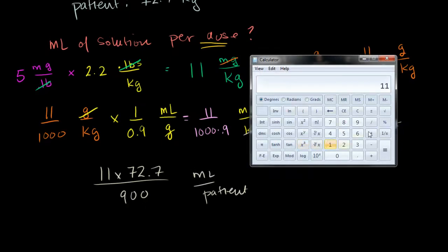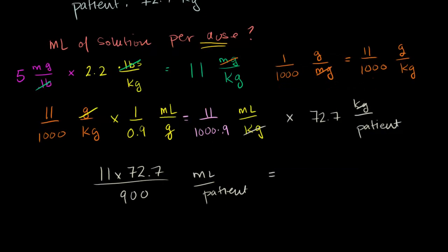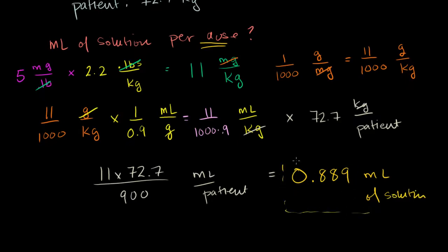So we have 11 times 72.7 equals 799, divided by 900, equals 0.889 milliliters of solution per dose. This is what we give every 12 hours. If they asked how many total milliliters over two days, we'd have 48 hours and multiply by 4, but that 12 hours was extra information for this problem. Hopefully this is useful and will ensure that any nurses serving me in the future give me my proper dosage — and hopefully the doctor got the right dosage to begin with, because otherwise it's all for naught anyway.